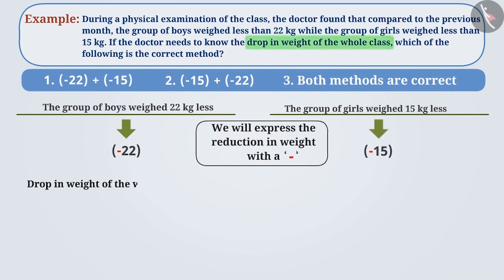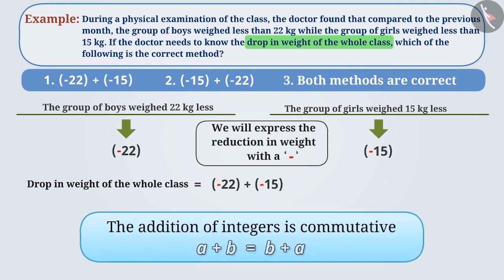To find the drop in weight of the whole class, we have to add minus 22 and minus 15. Since the addition of integers is commutative, we can add minus 22 and minus 15 in any order. In this way, both methods are correct.